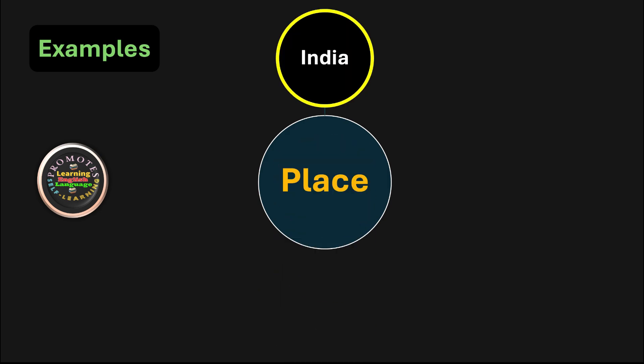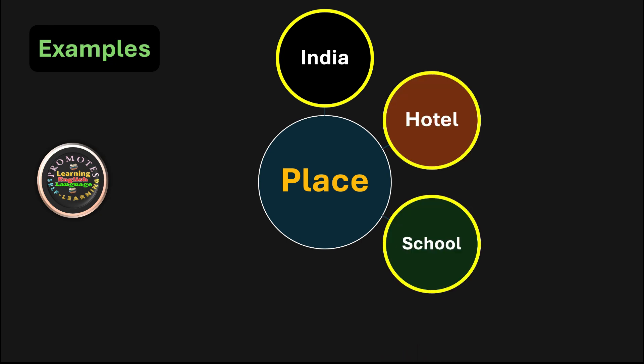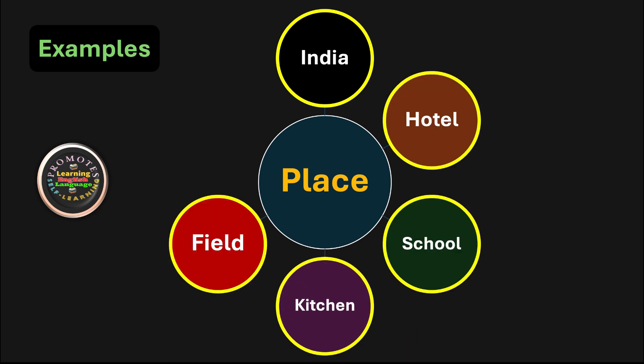We have some more examples. The name of place, like we have India, the name of country. Whether the place is big or small, it doesn't matter: hotel, school, kitchen, field, and playground. All these are names of places, therefore they are nouns.